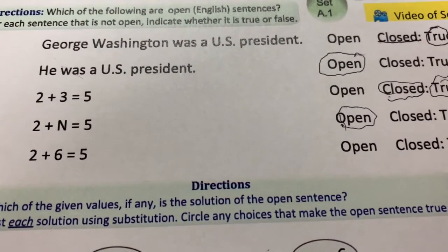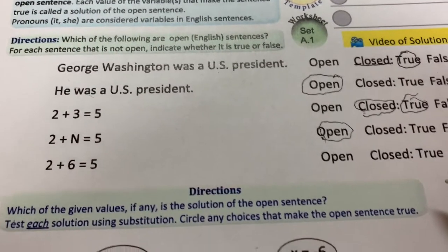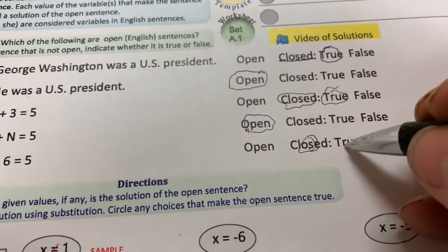And 2 plus 6 equals 5. Well, that's closed. And it's wrong. So, closed. False.